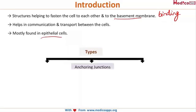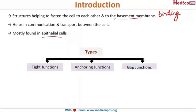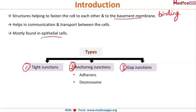The first type is tight junctions, the second is anchoring junctions, and the third is gap junctions. Anchoring junctions have three subtypes: adherens, desmosomes, and hemidesmosomes.